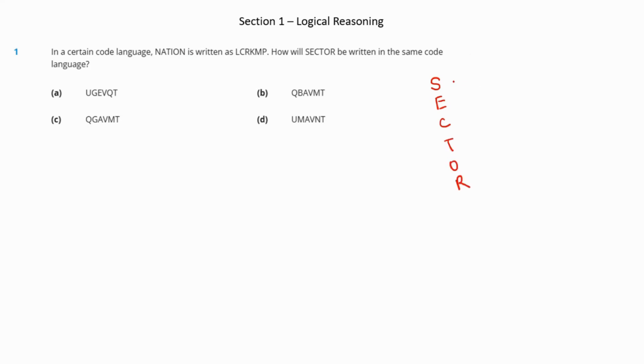So for SECTOR, S back two positions gives Q, E forward two positions gives G, C back two gives A, T forward two gives V, O back two gives M, and R forward two gives T. So our correct answer is option B: QGAVMT.